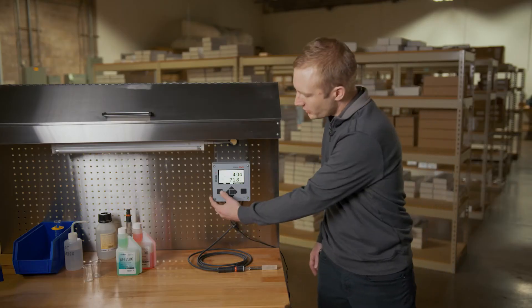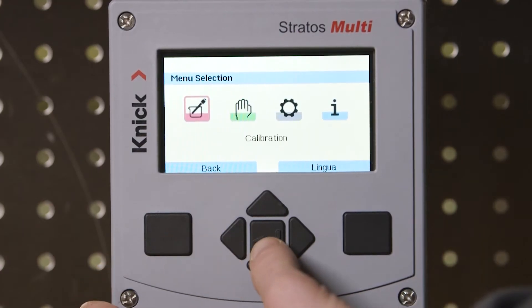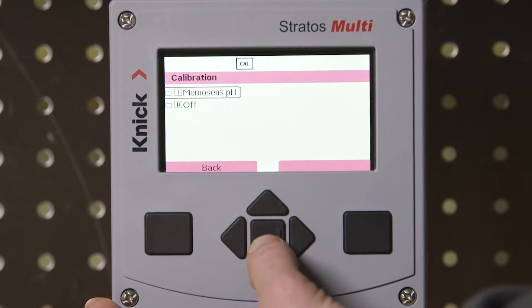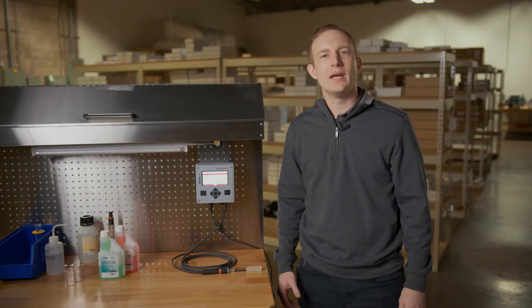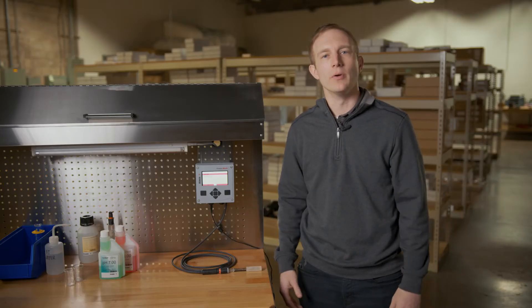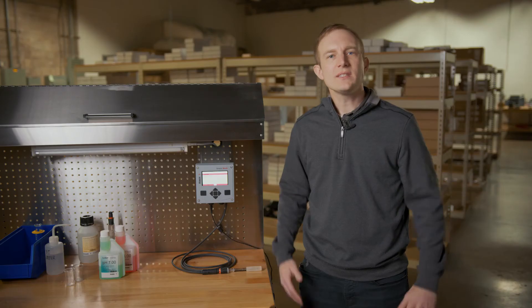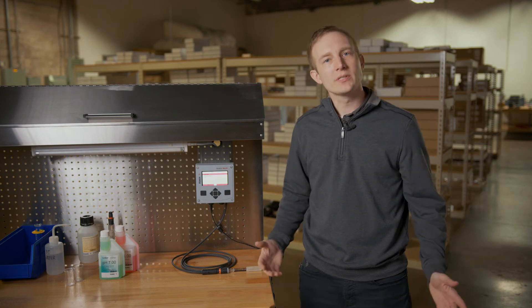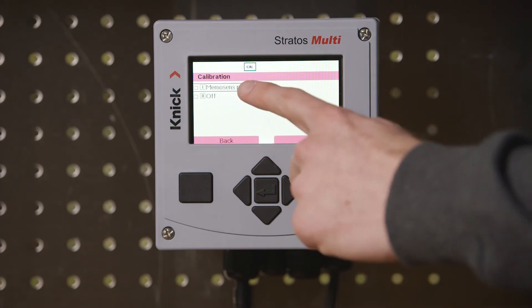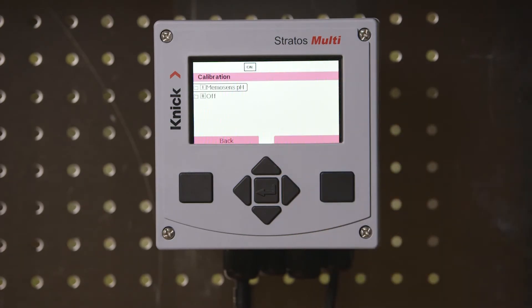Let's begin by pressing menu on the main screen and then enter on calibration. If access to the calibration menu is blocked via a passcode please note that the default is 1147. Once inside the calibration menu we will select the MemoSense pH sensor that is connected to channel one of our transmitter.